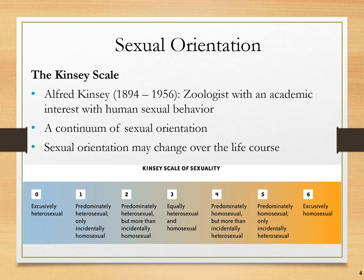Alfred Kinsey, who was a zoologist in the first part of the 20th century, was actually intensely influential in the early study of human sexual behavior. He had two major contributions to our understanding of human sexuality, the first of which is the concept of a continuum of sexual orientation. This idea is a bit dated because it comes from the early 1950s, but because it was so utterly revolutionary for its time, it still is very useful today.